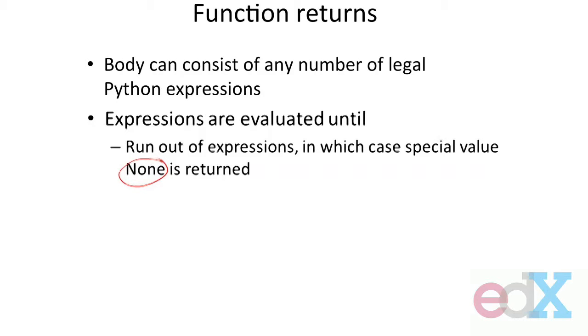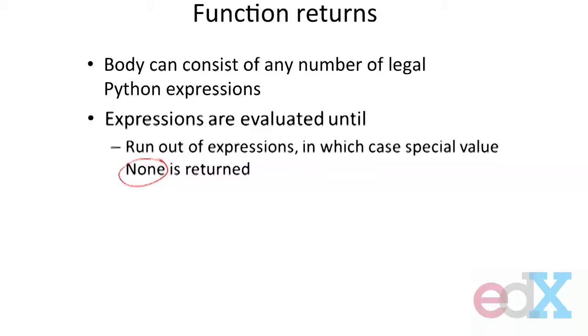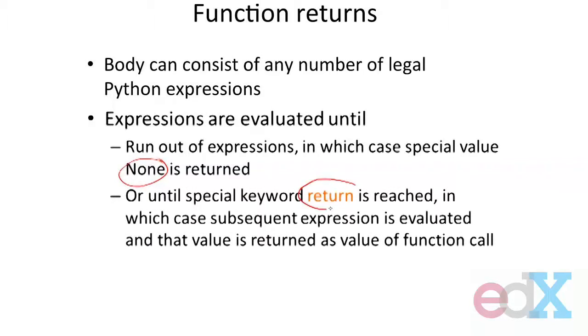And if you think about my invocation, I said I was going to bind z to some value. If I get to the end of the expression and there's nothing returned, I'm going to just bind it to none. Alternatively, I will keep executing instructions until I hit that special keyword return that we saw earlier. And in that case, the expression immediately following that keyword return is evaluated and that value is returned as the value of the function called.